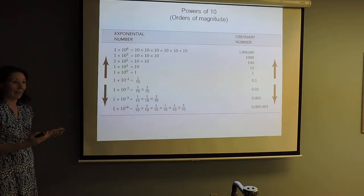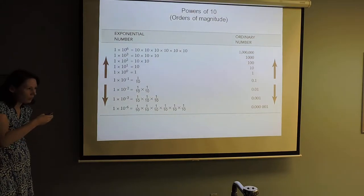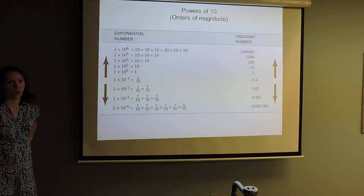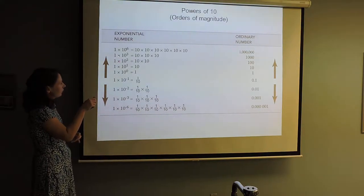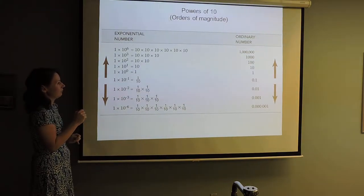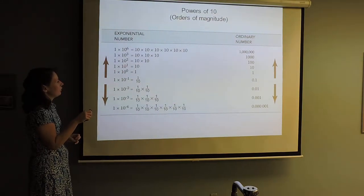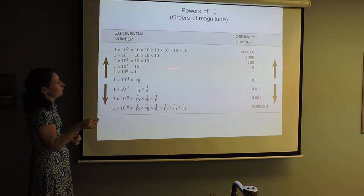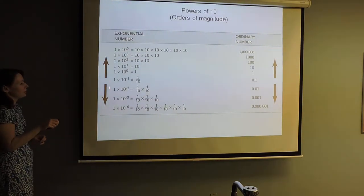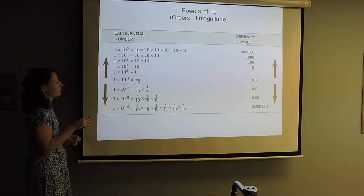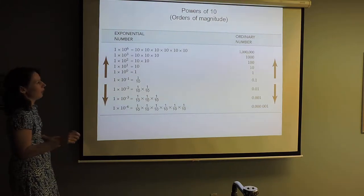We call these orders of magnitude — a power of 10. When someone says 'that's four orders of magnitude larger,' it means you're multiplying by a power of 10 four times. So 10 to the 0 is 1, 10 to the 1st is 10, 10 to the 2nd is 100, 10 to the 3rd is 1,000. And going the other direction: 10 to the negative 1st is 1/10, 10 to the negative 2nd is 1/100 — all getting smaller.